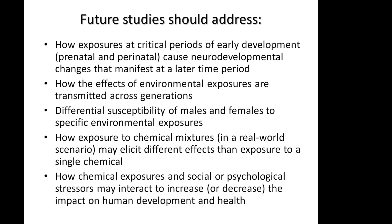There's a lot more to be done — we're just seeing the tip of the iceberg. Future studies should address how exposures at critical periods of early development cause neurodevelopmental changes that manifest at a later time. We need to know how the effects of environmental exposures are transmitted across generations, and how the differential susceptibility of males and females to specific environmental exposures may reveal something about the sex bias in neurodevelopmental disorders such as autism. We also need to know how exposure to chemical mixtures in a real-world scenario may elicit different effects than exposure to a single chemical, as is often used in studies such as ours.